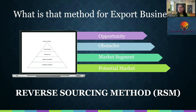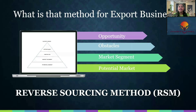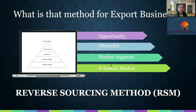Now moving to stage two. This is called market segmentation. What is this market segment? There are different types of buyers — there are nine types of buyers. This is the major area where people think about how to find buyers.